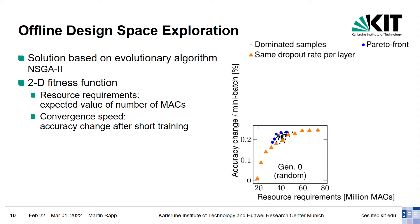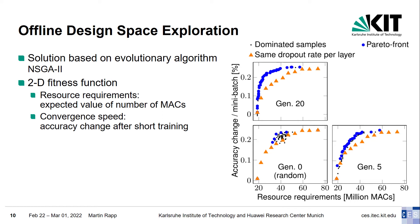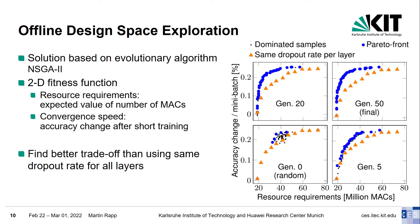The figure visualizes the optimization process. The orange triangles show the tradeoff between computational resource requirements and convergence speed achieved by using the same dropout rate for all layers, similar to how state-of-the-art techniques work. The blue circles depict the current Pareto front found by our DSE. The initial population comprises random dropout vectors — they tend to have similar resource requirements and fail to cover the whole Pareto front. After already few generations, our DSE begins to cover the whole range, and the Pareto dropout rates are further refined. The final Pareto front finds a much better tradeoff than using the same dropout rate for all layers. It is important to note that the DSE is performed only once offline by the server, not by the resource-constrained devices themselves.